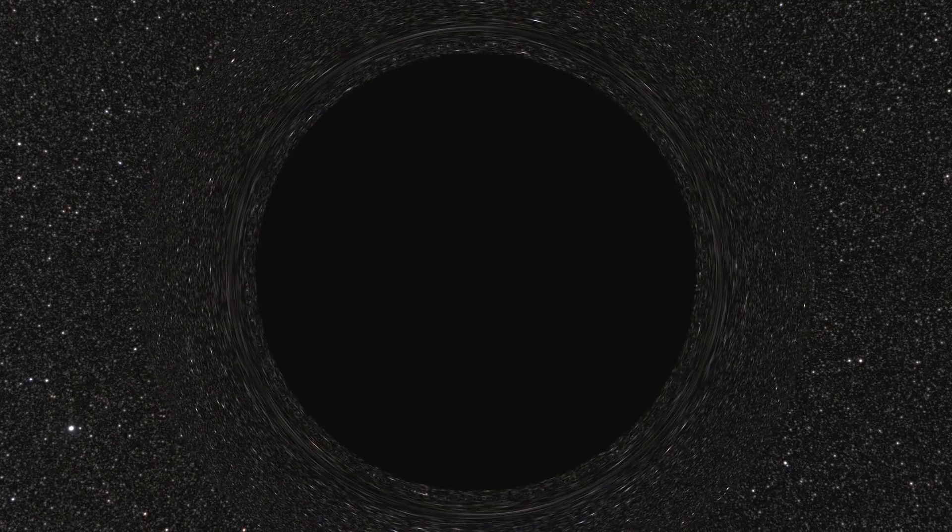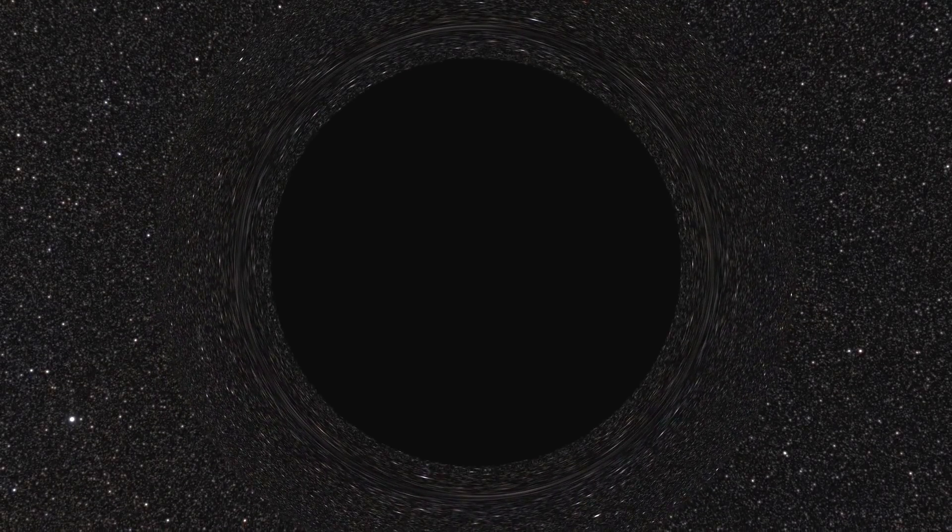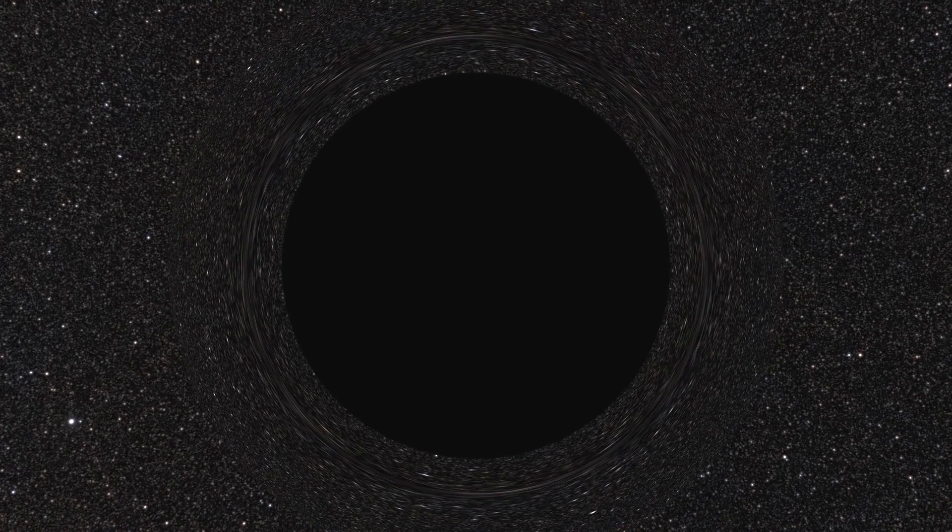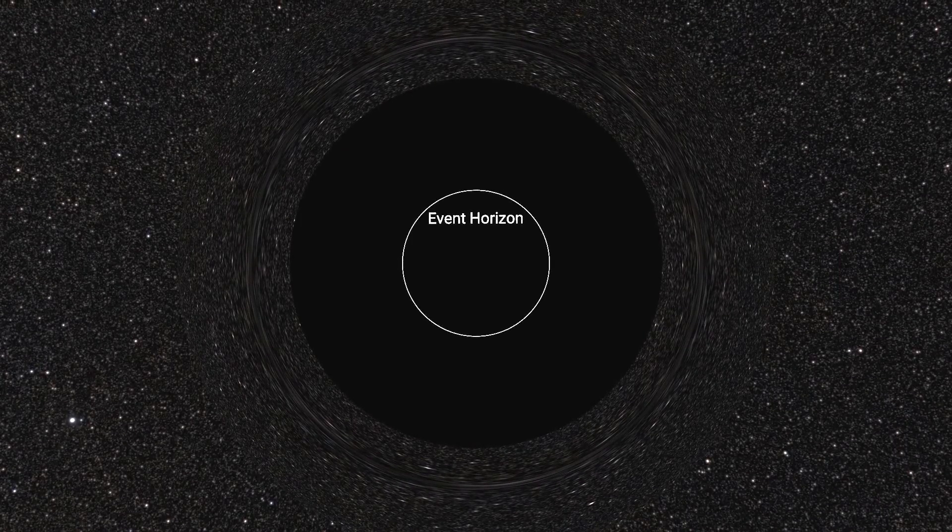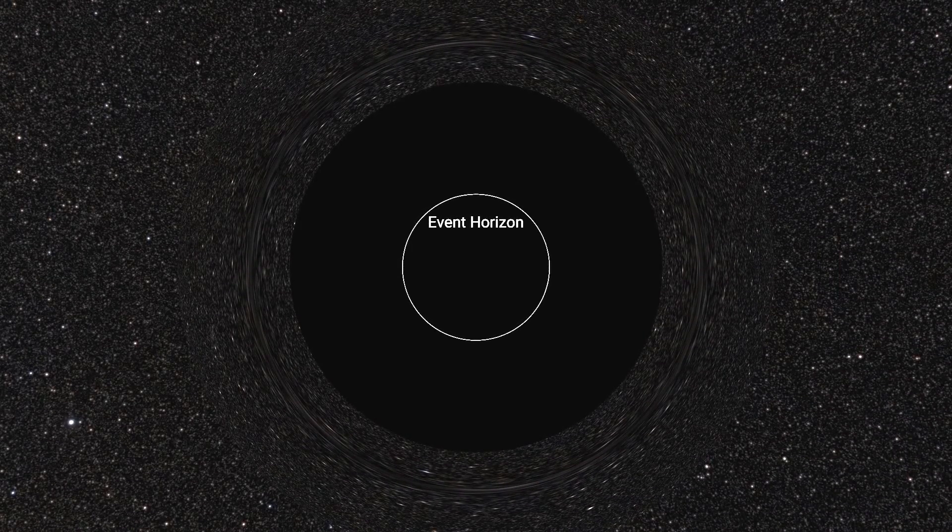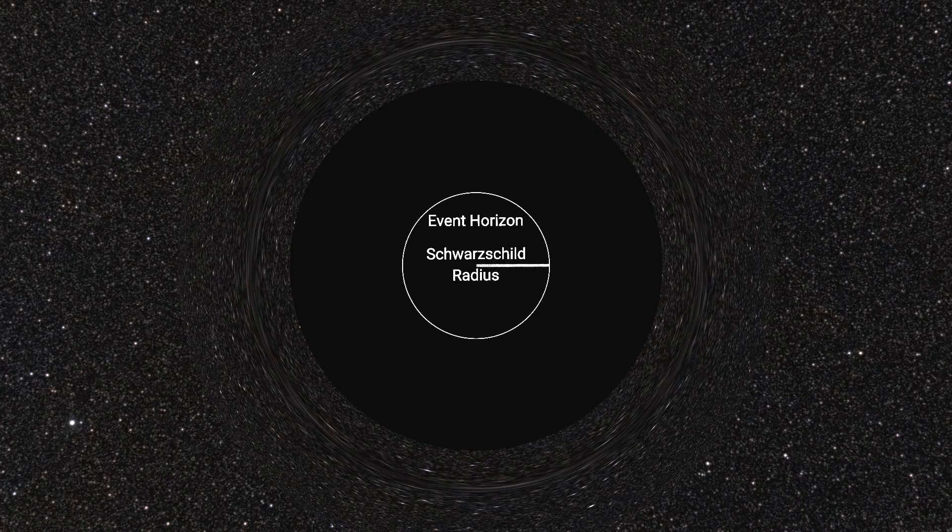So to get back on topic, a black hole possesses so much mass in relation to its size that beyond a certain distance from its center, nothing is able to escape, including light. This is the event horizon, and its distance from the center of the black hole is the Schwarzschild radius.